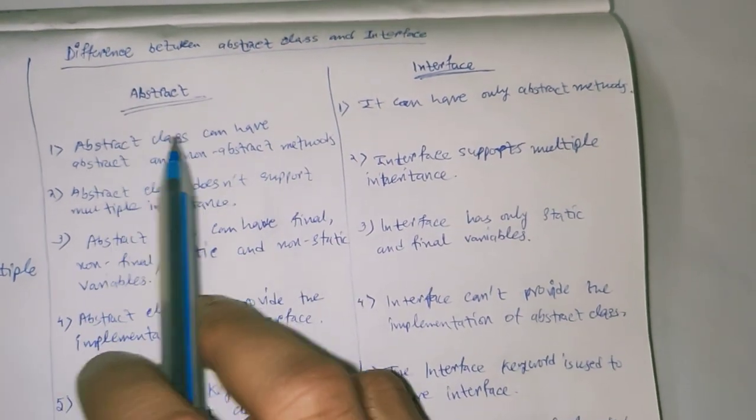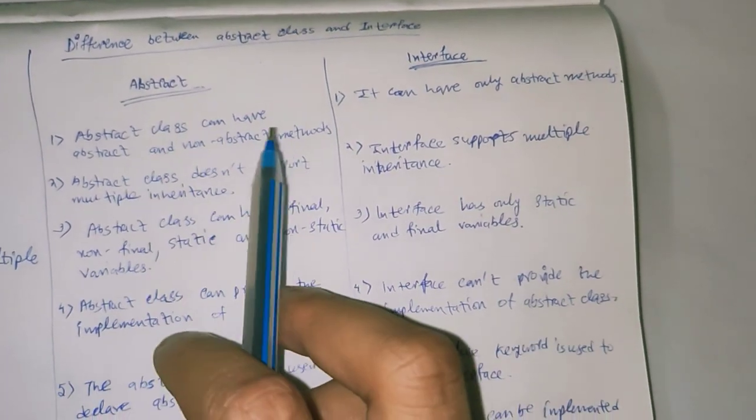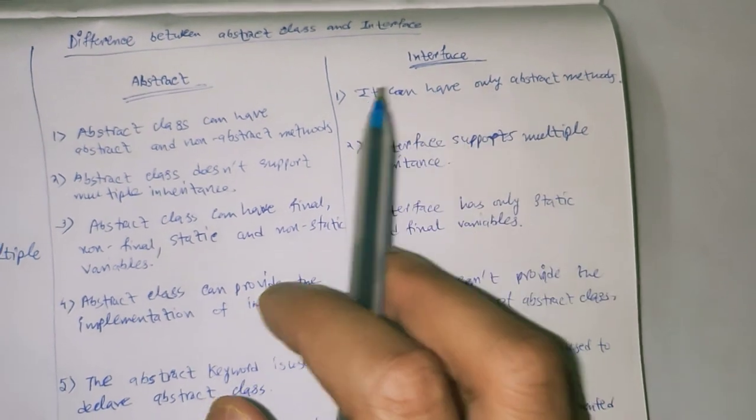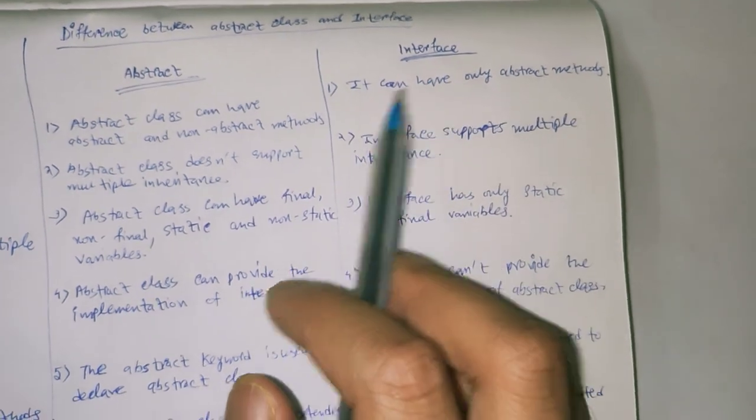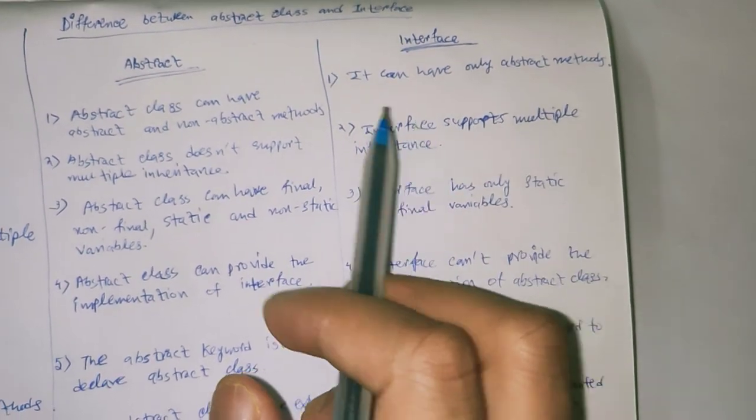Abstract class can have abstract and non-abstract methods. Interface can have only abstract methods.